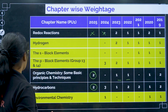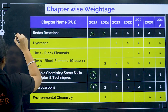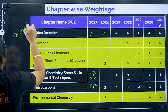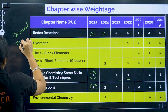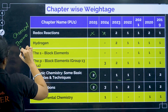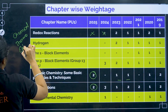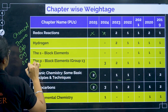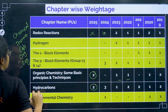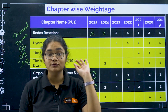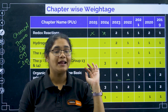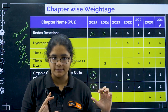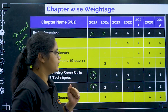So if I talk about PU1, the important chapters are: chemical bonding, thermodynamics, equilibrium, and the two organic chapters — organic chemistry and hydrocarbons. These five chapters are super important and you should finish them first after completing the PU2 syllabus. I will be telling you more about that.